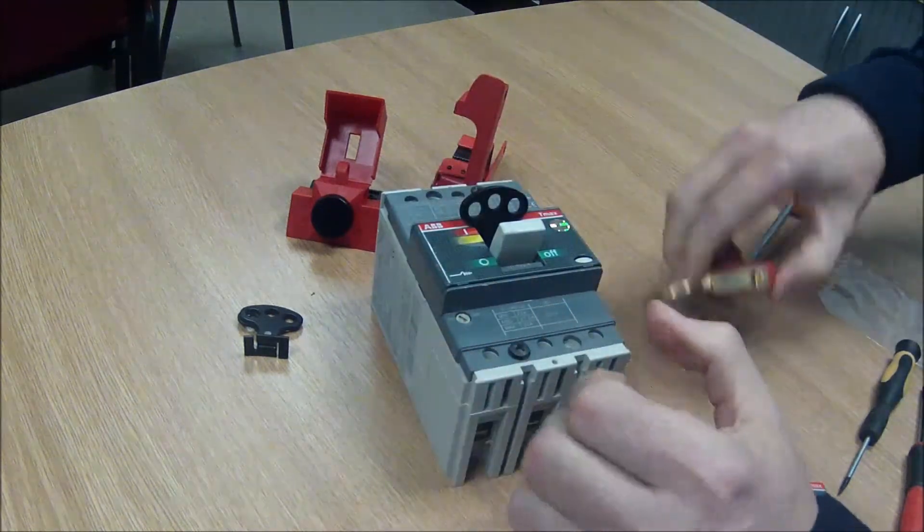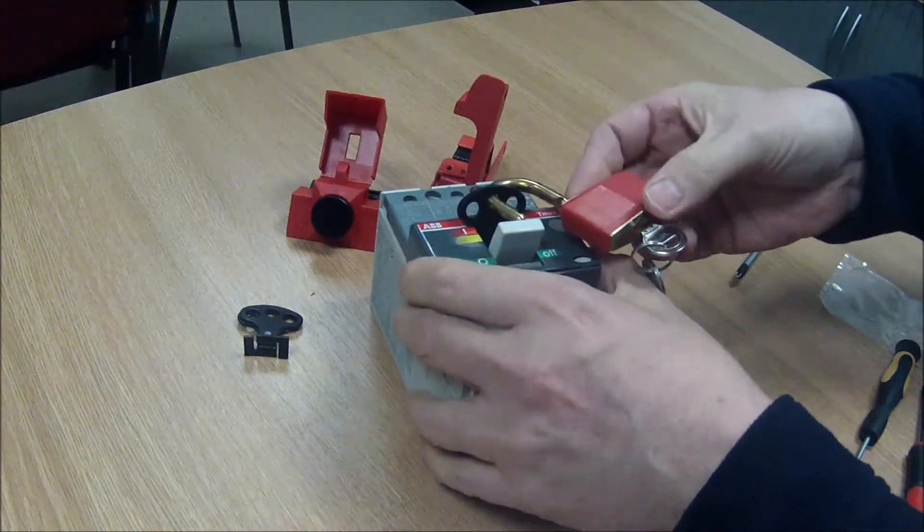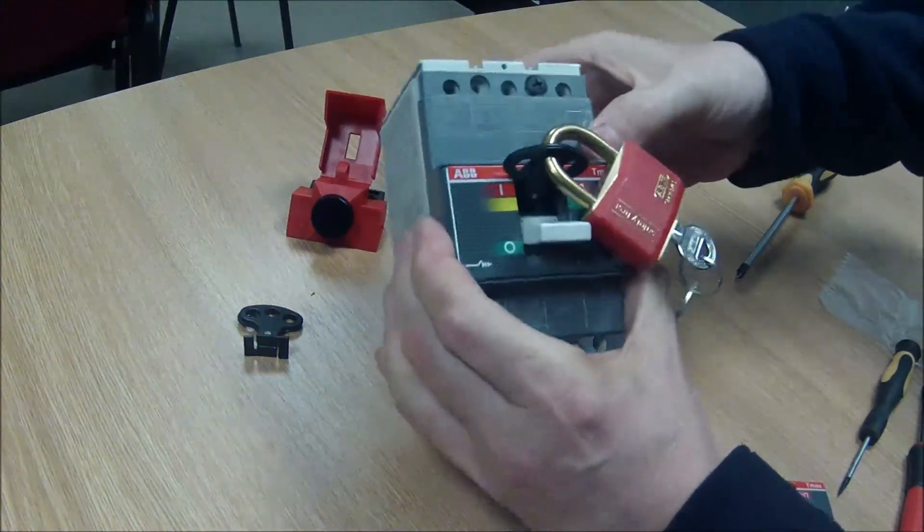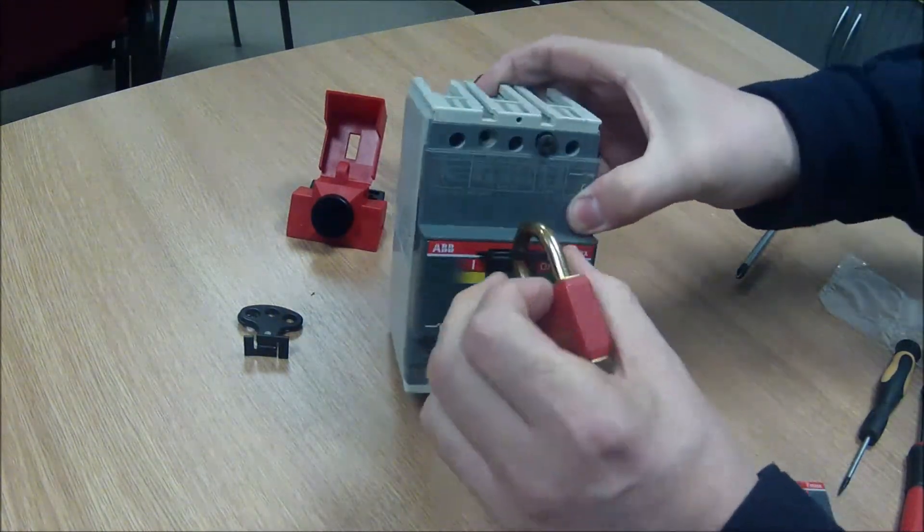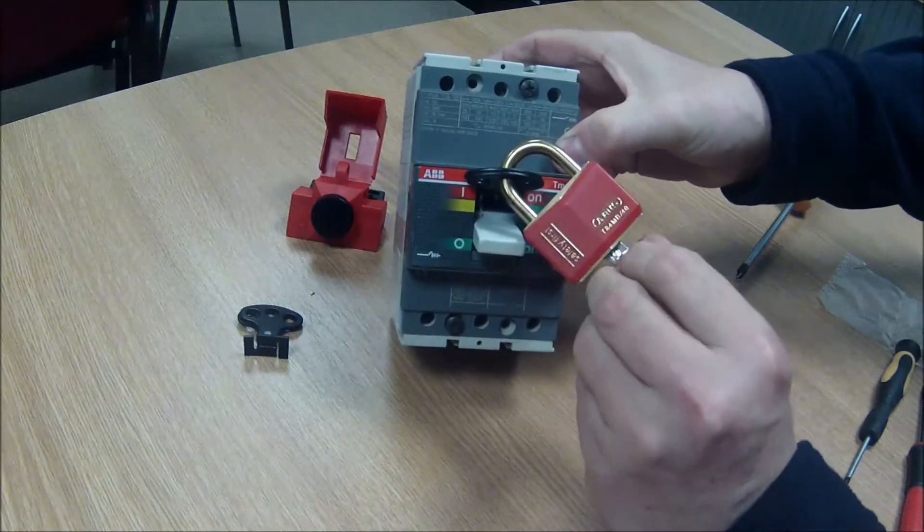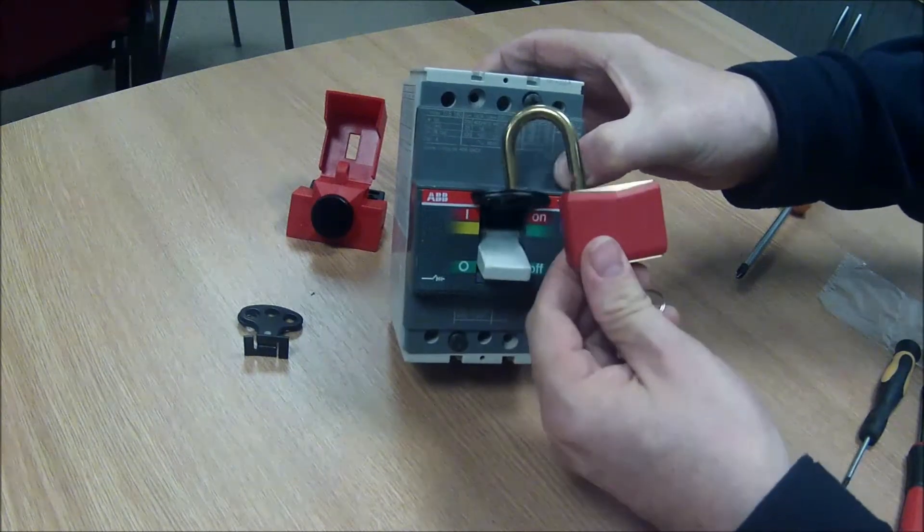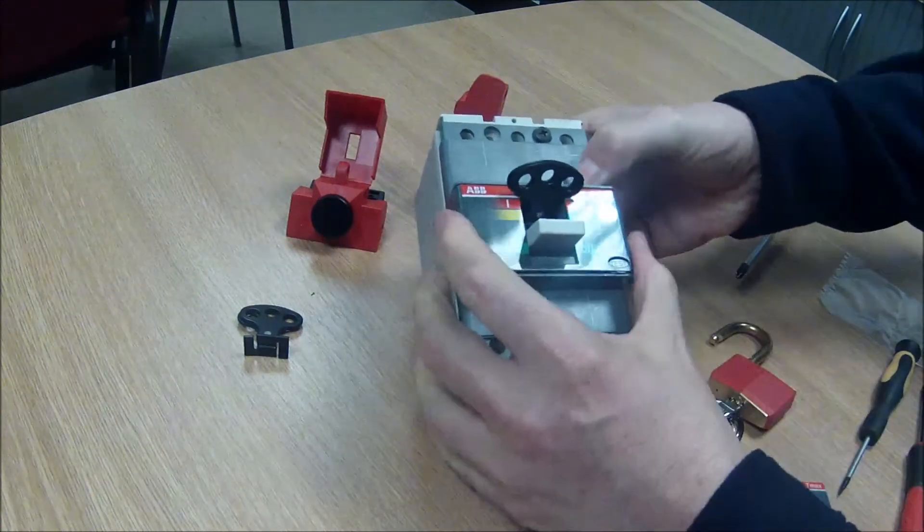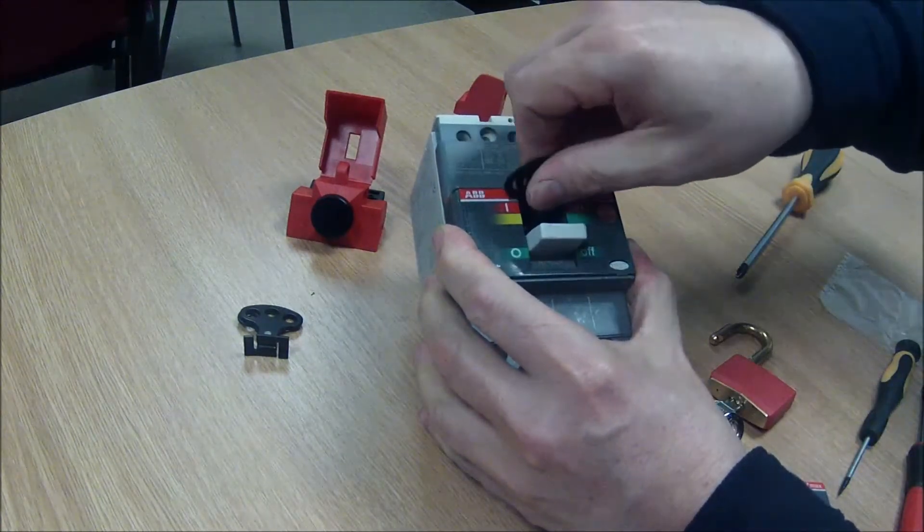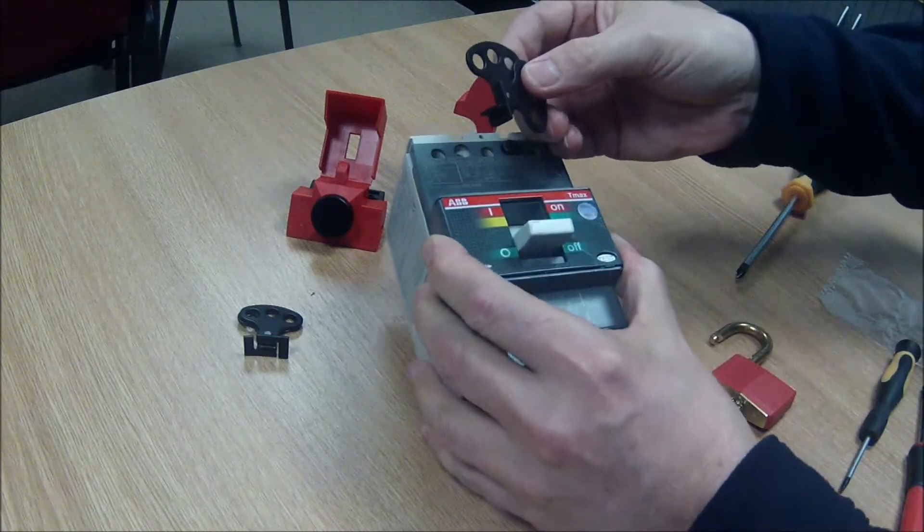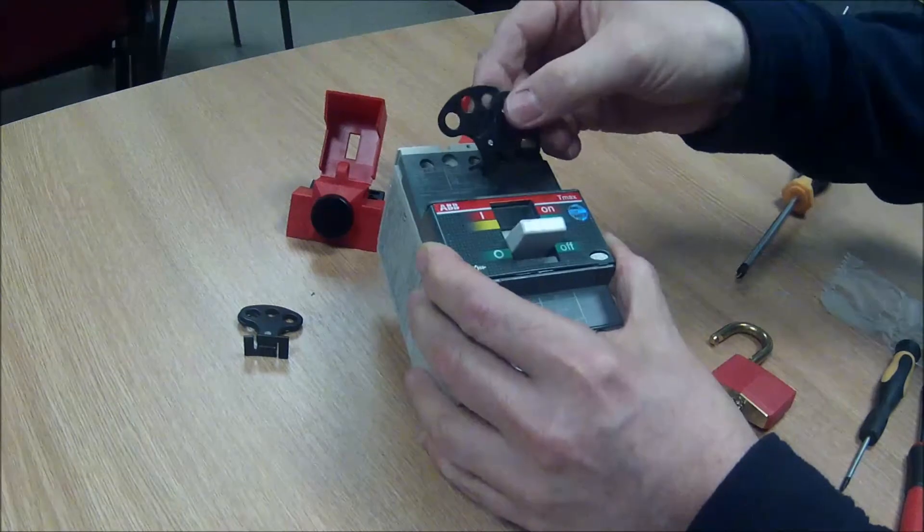You push it in like that, align the padlock holes and pop the padlock through. As you can see there are three padlock holes allowing you to put up to three padlocks on there for multiple work isolation and lockout. So as the name suggests this is a removable padlock device. The part number for this is the 51393.